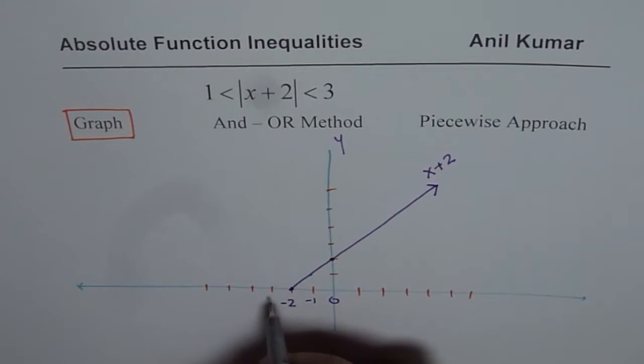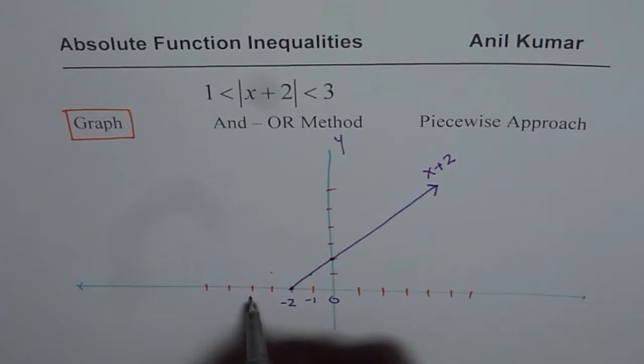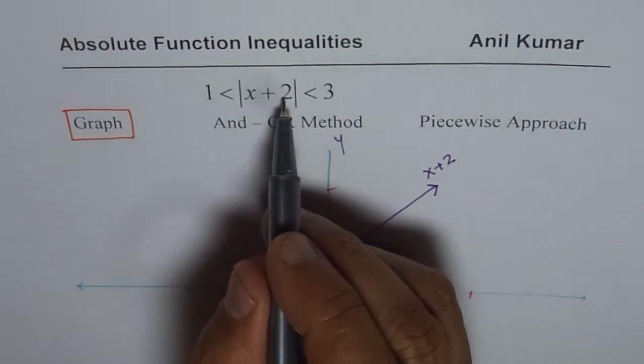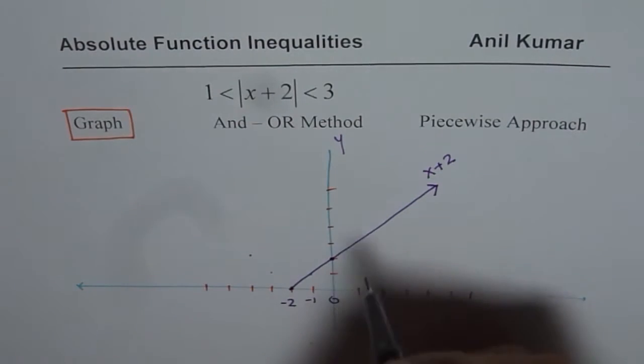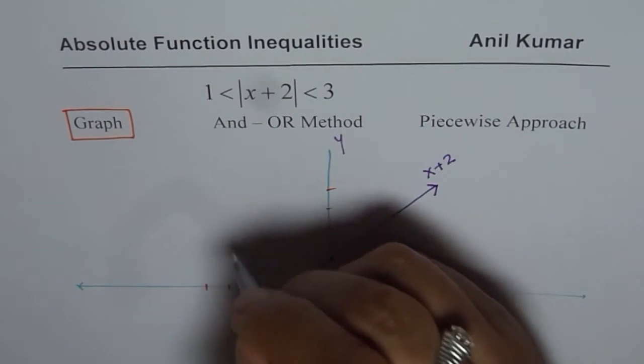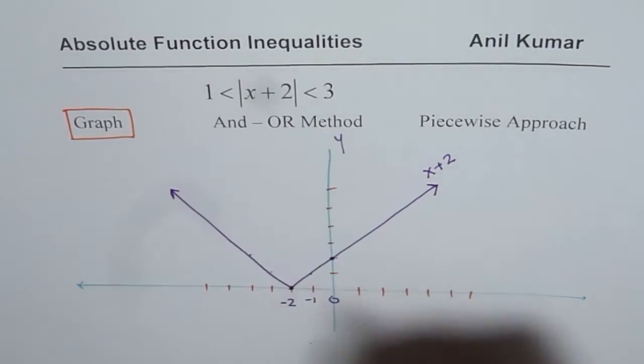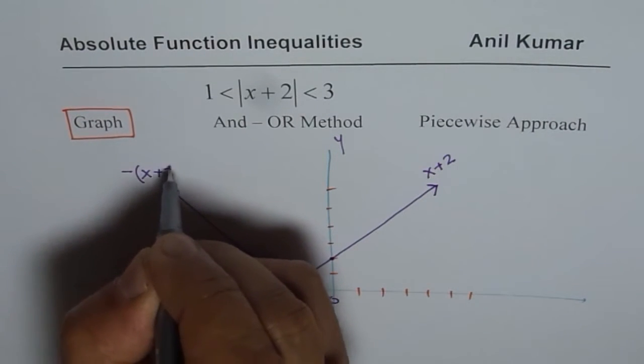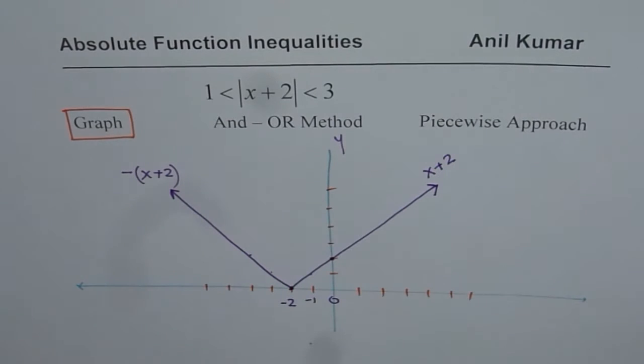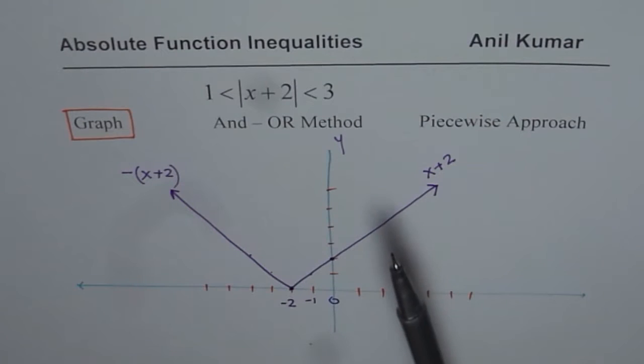For the absolute function, when I take a value minus 3 it is going to be 1. And then for minus 4 it is going to be minus 4 plus 2, which is minus 2. The absolute value is again 2. So that gives us the left side portion of the absolute function. Generally this will be minus of x plus 2. That is sometimes we write absolute function as a piecewise function and then solve it. I hope now you understand the relation between these two.